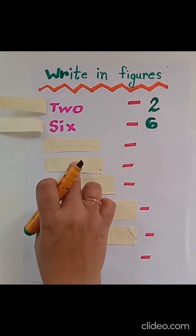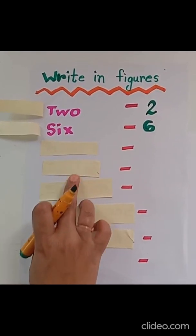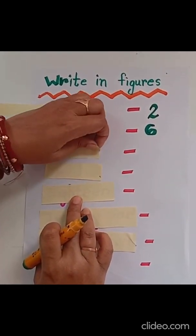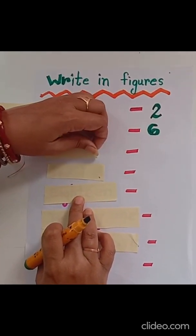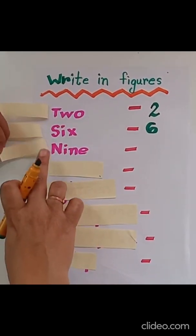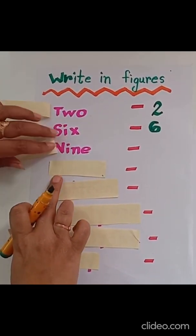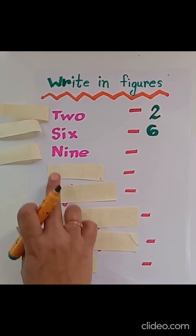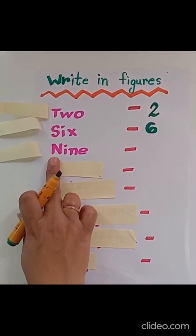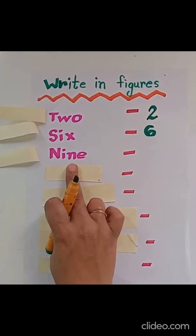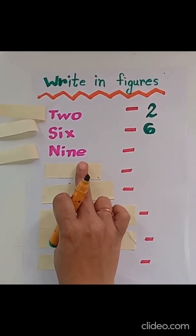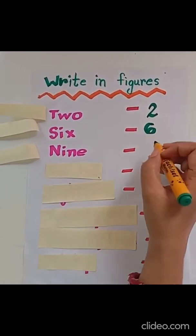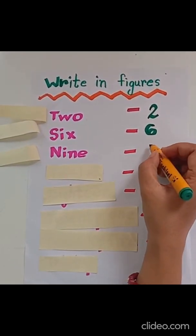Let's see the next number name, children. N-I-N-E, 9. So let's write 9.